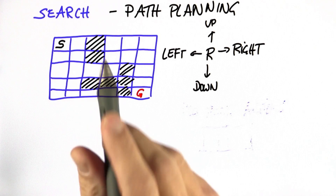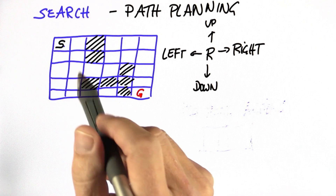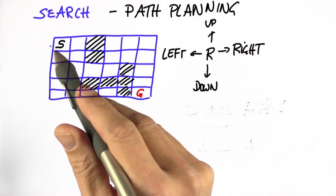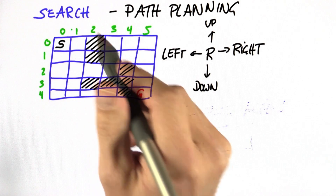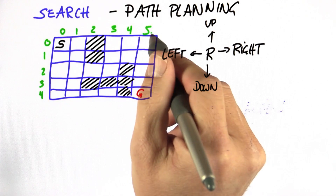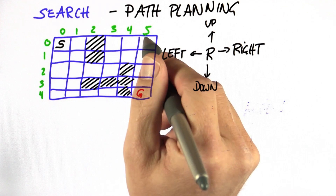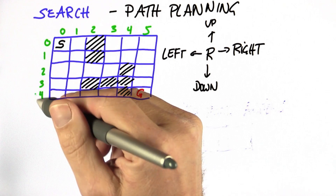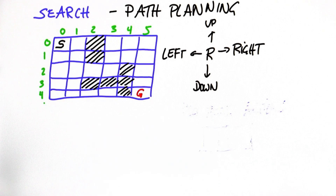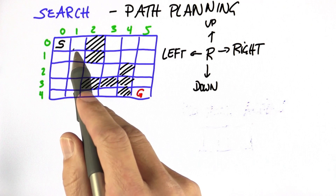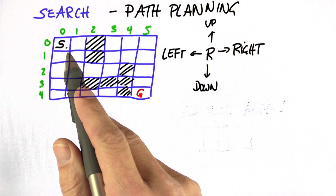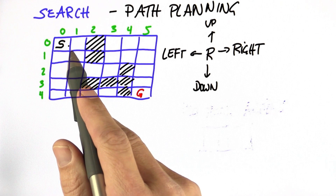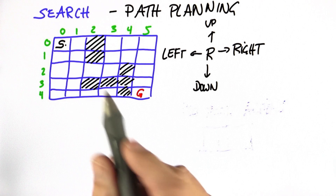The big question now is: can we write a program that finds the shortest path from start to goal? To do so, let's give the grid cell names. We have six columns named from 0 to 5 and five rows from 0 to 4. The basic idea I'll pursue is that I keep a list of nodes that I wish to investigate further, or as we call it in search, expand.